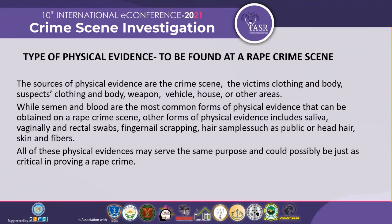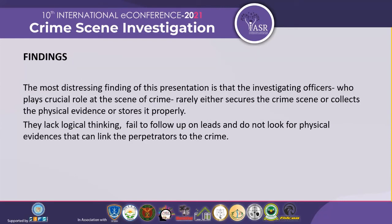What kinds of physical evidence can be found at a rape crime scene? The sources of physical evidence are basically the crime scene itself, the victim's clothes and body, the suspect's clothes and body, weapons, vehicles, and other areas. Blood and semen are the most common forms of physical evidence found at a rape crime scene. Other forms of physical evidence also include saliva, vaginal and rectal swabs, fingernail scrapings, hair samples such as pubic hair and head hairs, and skin and fibers. All these evidences may serve the same purpose and could possibly be just as critical.